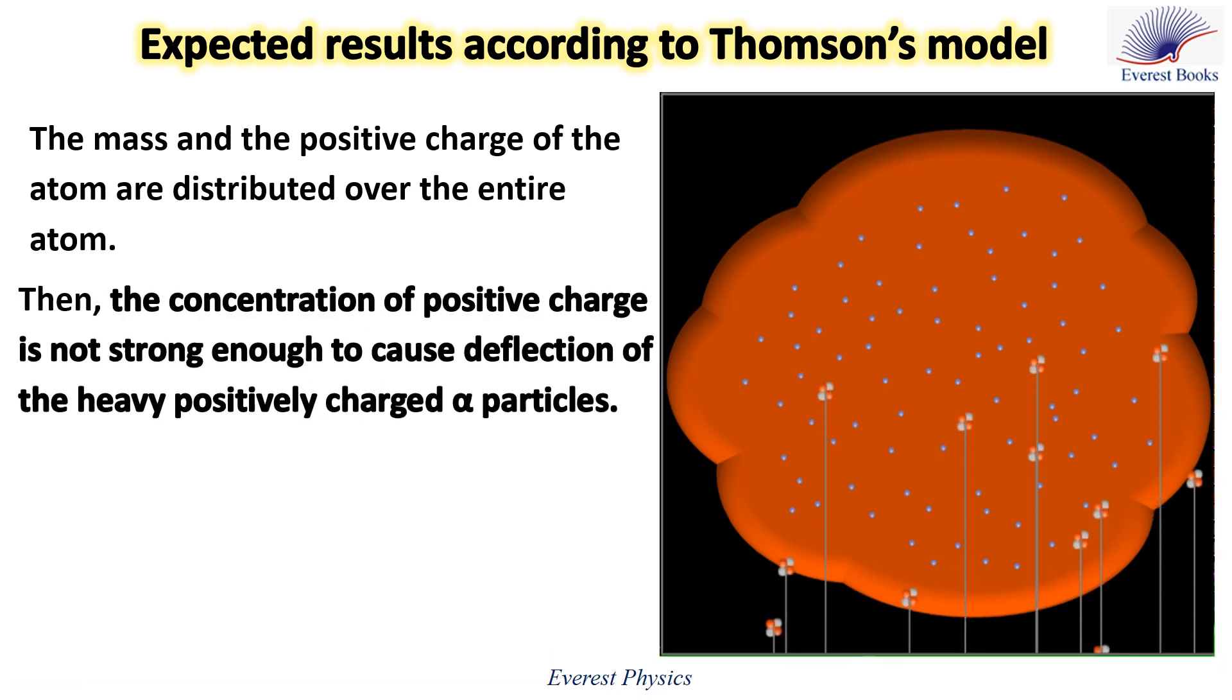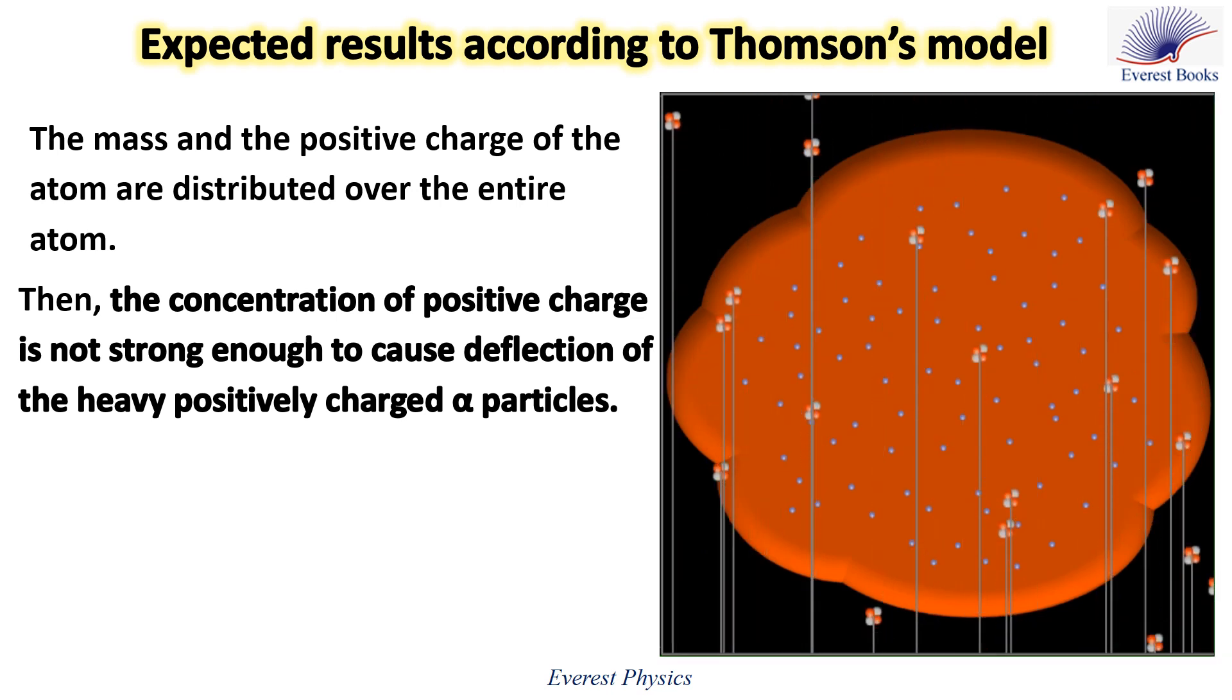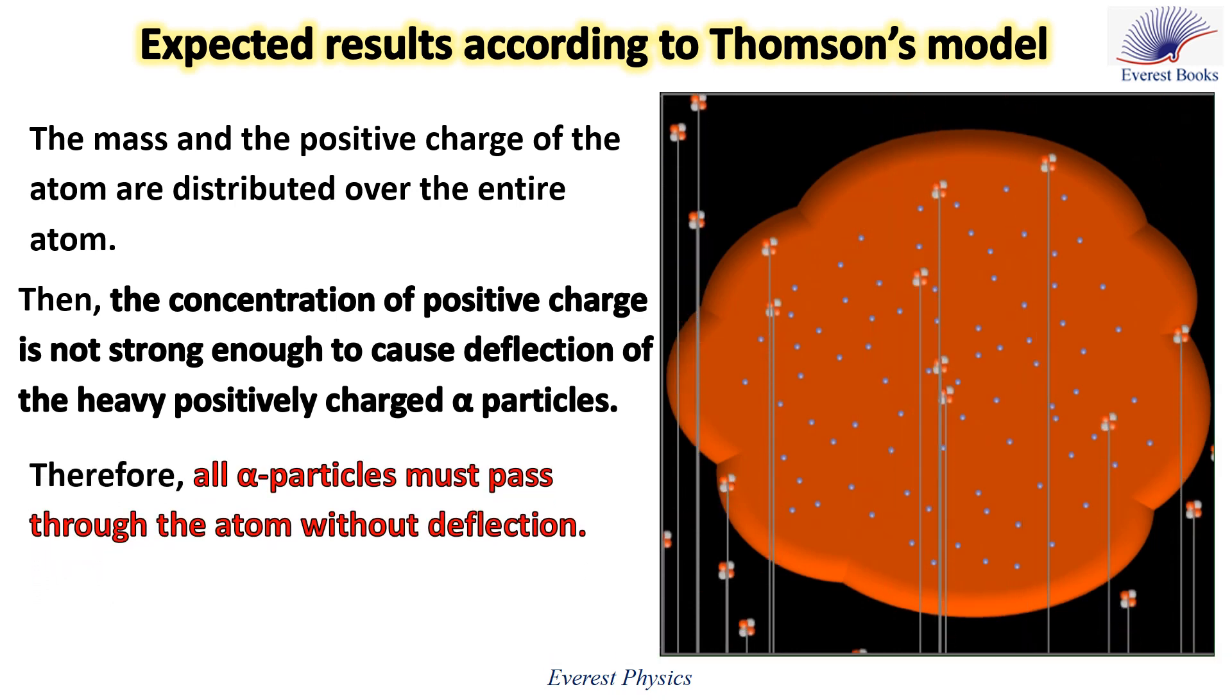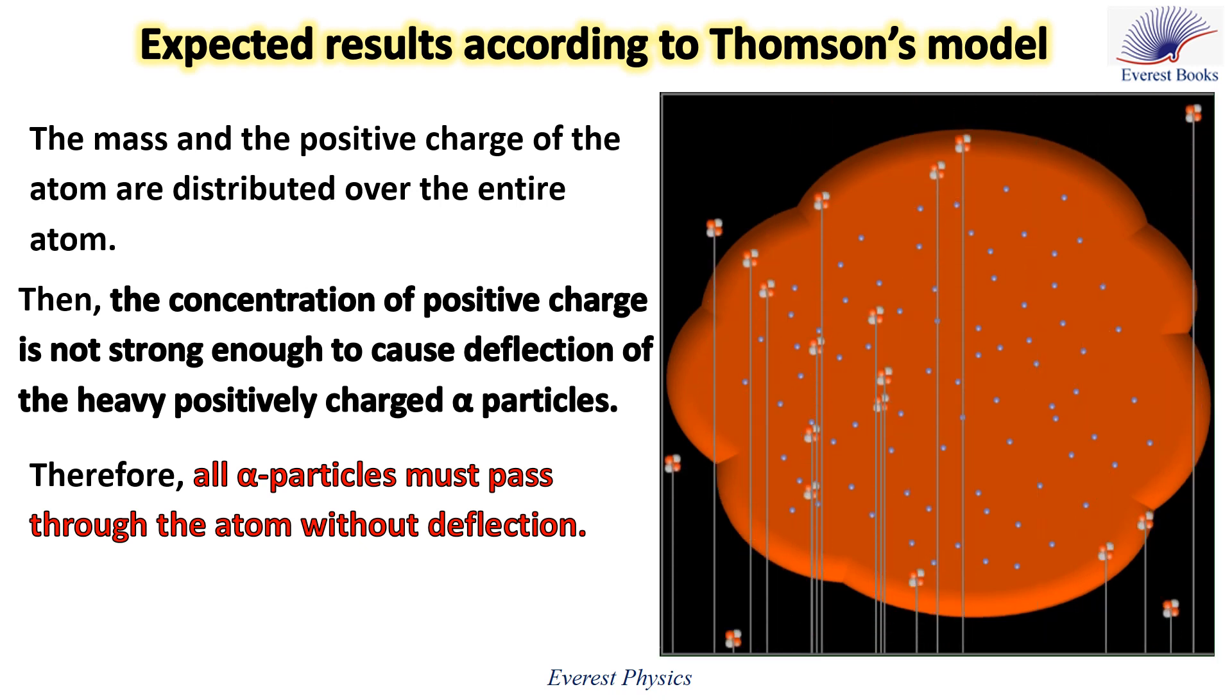The concentration of positive charge is not strong enough to cause deflection of the heavy positively charged alpha particles. Then, according to Thomson's model, all alpha particles must pass through the atom without deflection.